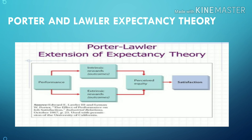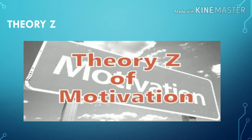Next is Porter and Lawler's Expectancy Theory. Similar to Vroom's theory, they concluded that an individual's motivation to complete a task is affected by the reward they expect to receive for completing it. Intrinsic rewards include sense of achievement, job satisfaction, and positive inner feelings. Extrinsic rewards include higher pay, commission, and job promotion. The fundamental aspect is the relationship between performance and satisfaction.